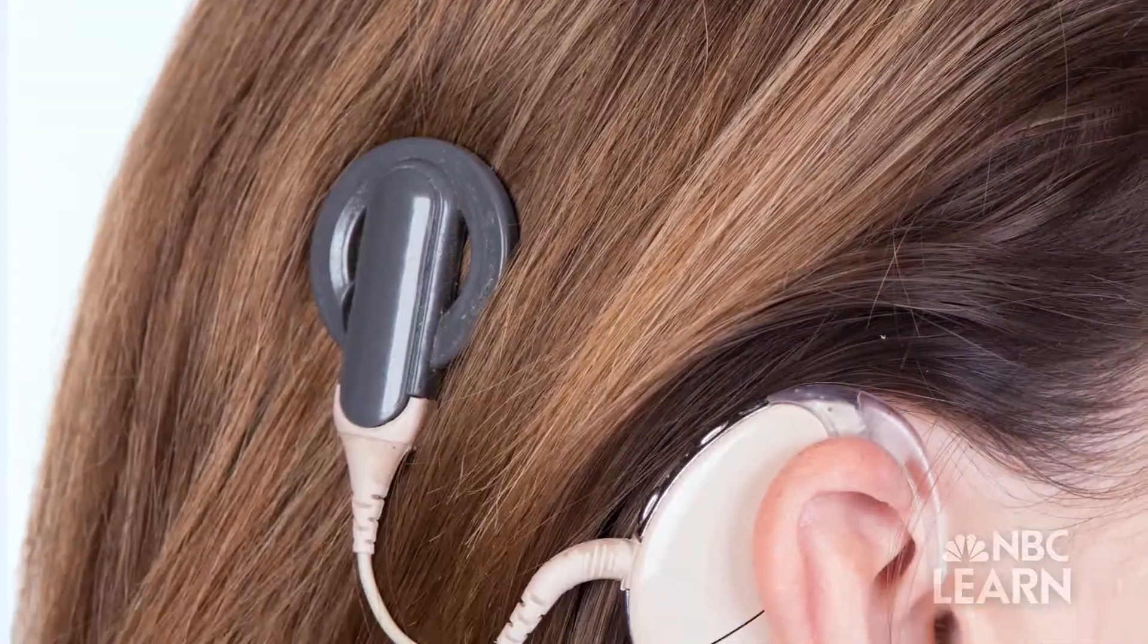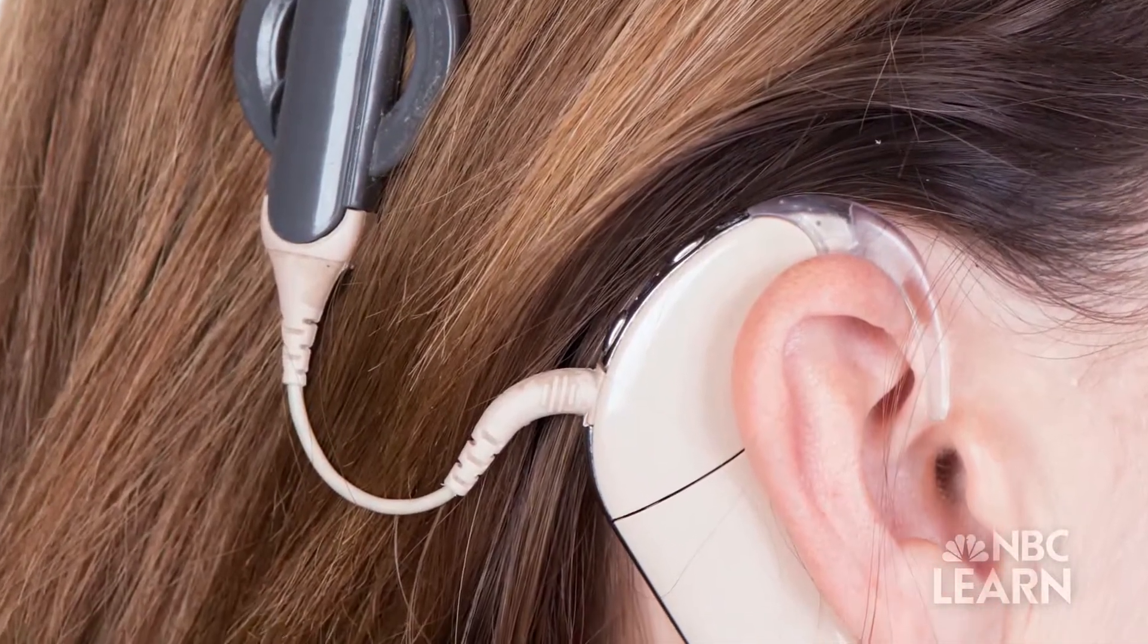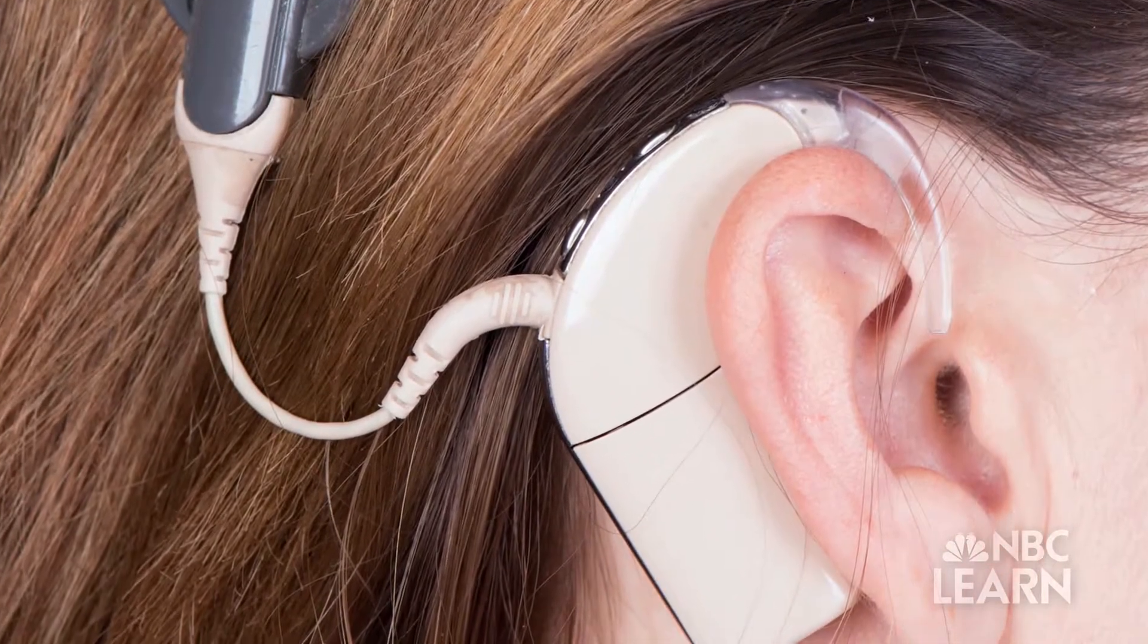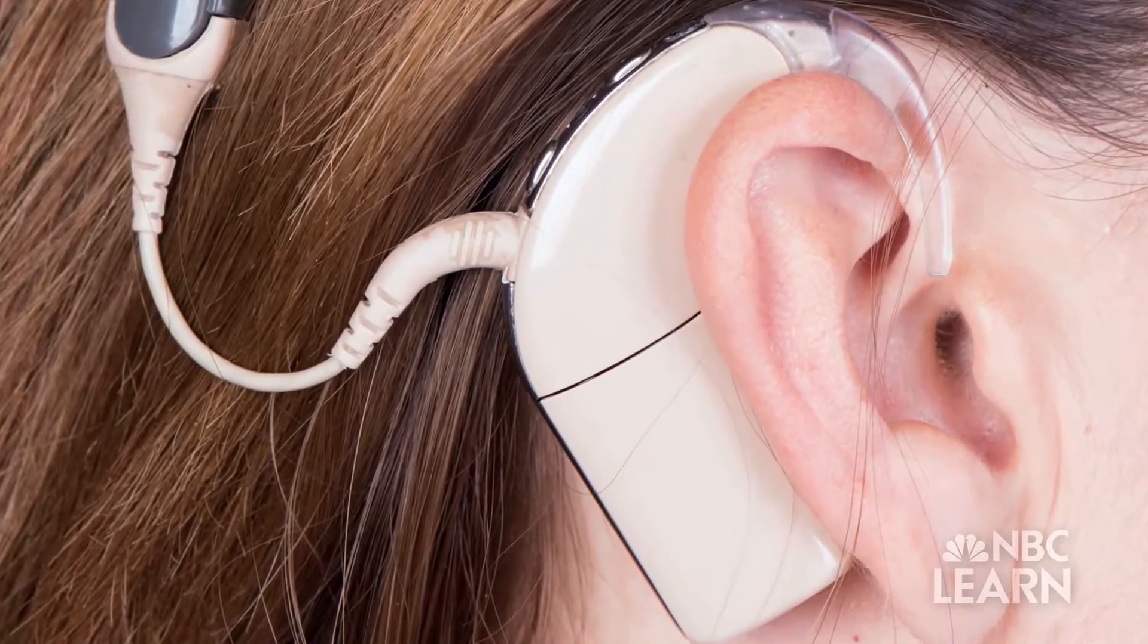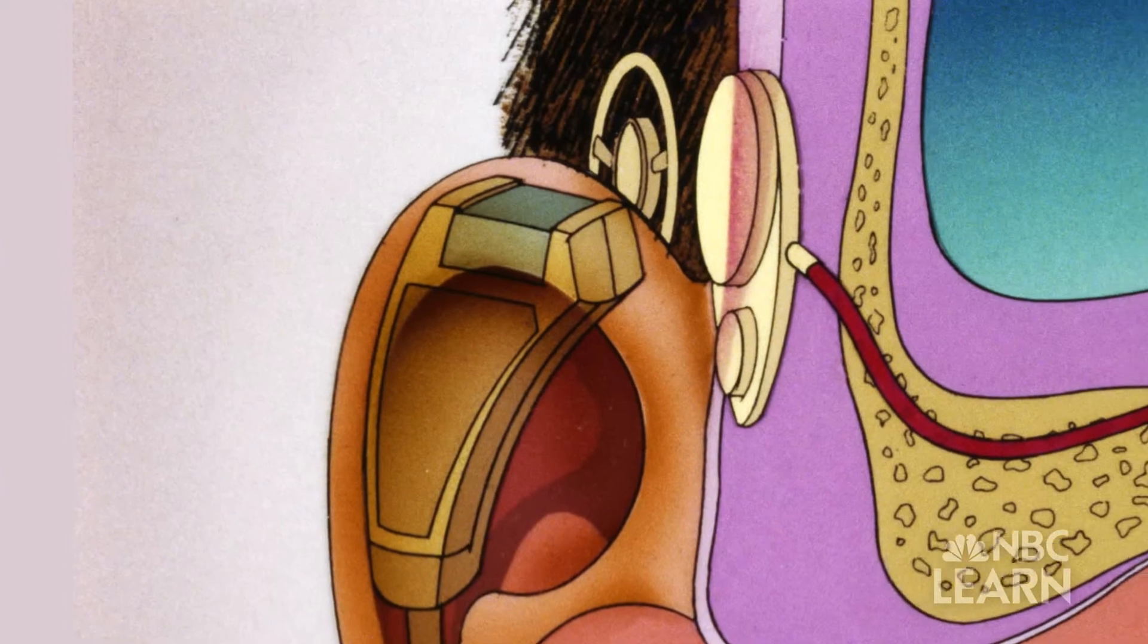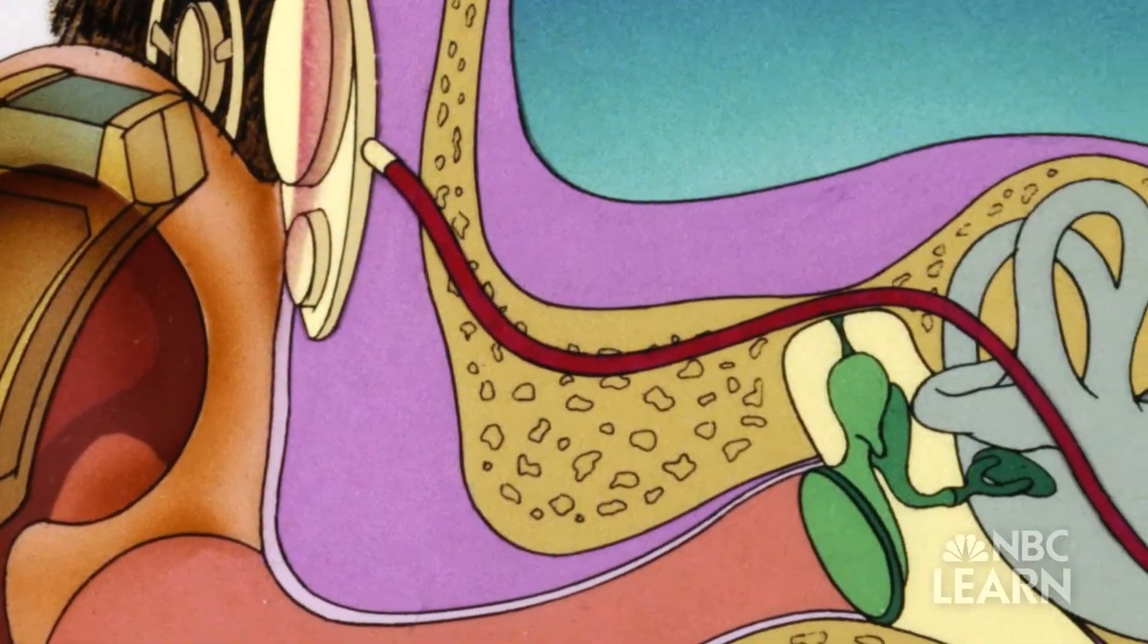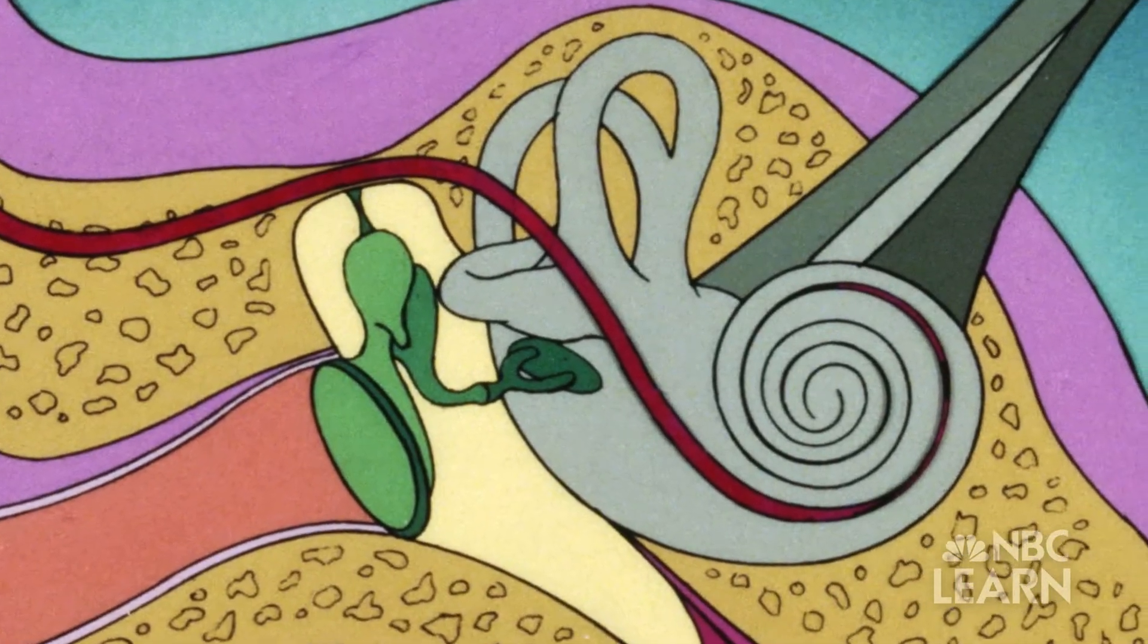A cochlear implant consists of two parts: the visible external microphone made up of a sound processor and transmitter, and the internal receiver and electrode array which connects directly to the patient's nervous system.